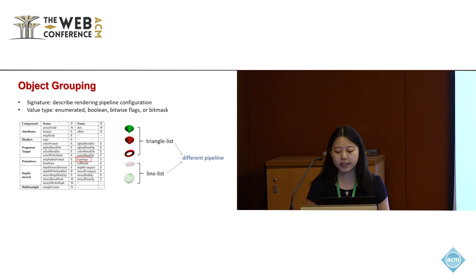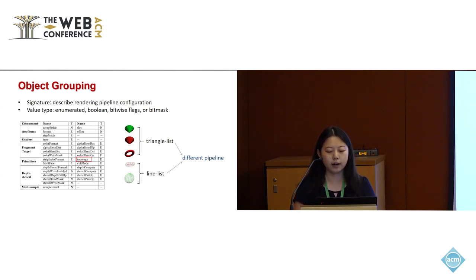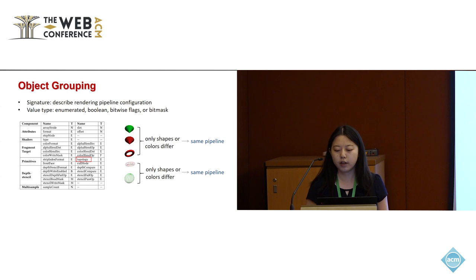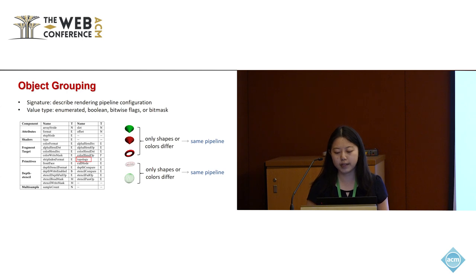Different signatures require different rendering pipelines. For instance, graphics with a line-list topology necessitate a different pipeline compared to those with a triangle-list topology. On the contrary, when the rendering pipeline configuration remains consistent and only the graphics shape differs, it is possible to employ the same pipeline for rendering.